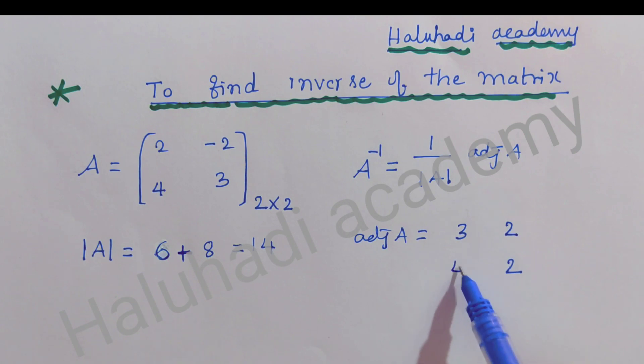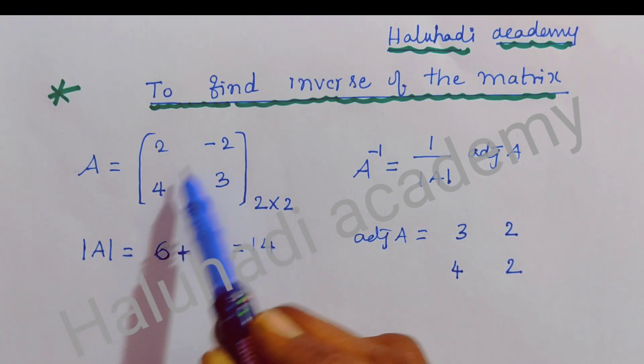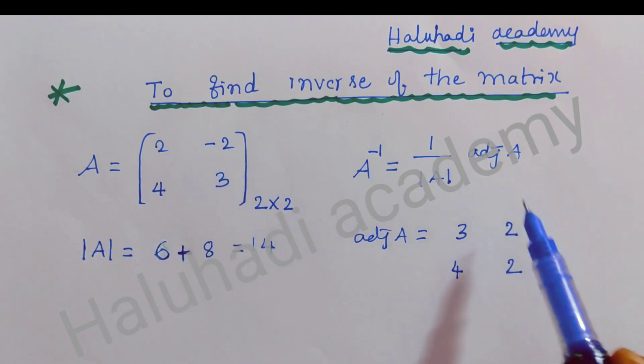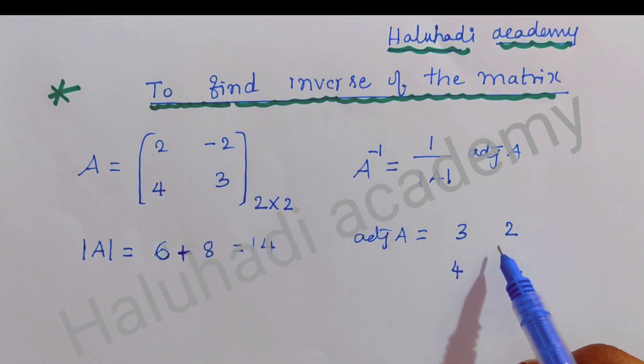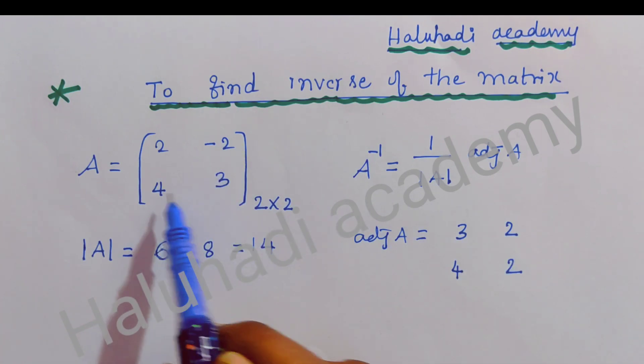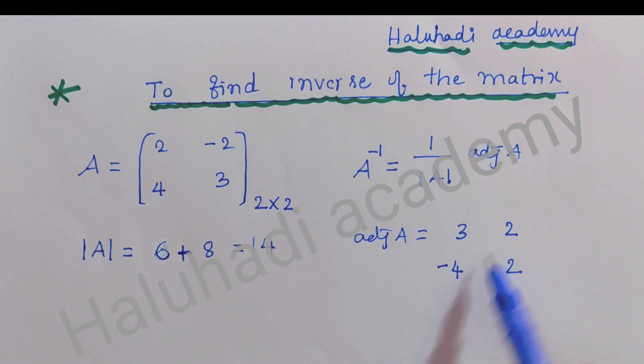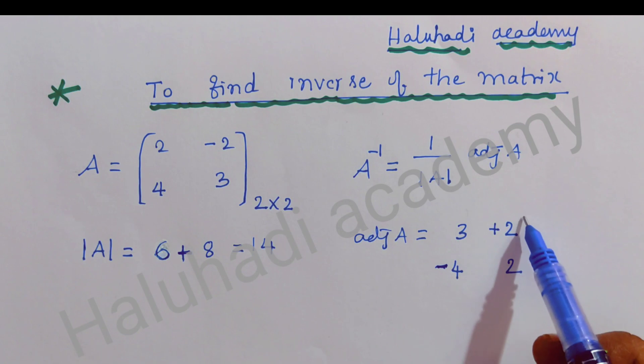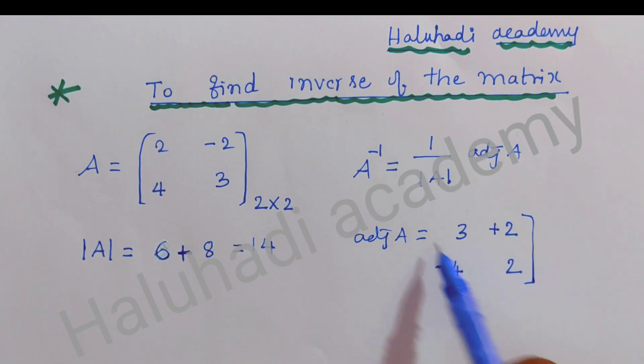Exchange only the elements, not the symbols. Because here it's -2, so it becomes +2. And here it's +4, so it becomes -4. This is the very easiest method to find the adjoint of A for 2×2 matrix.